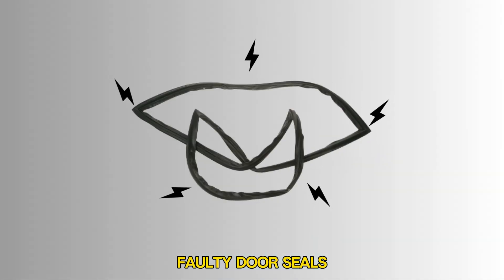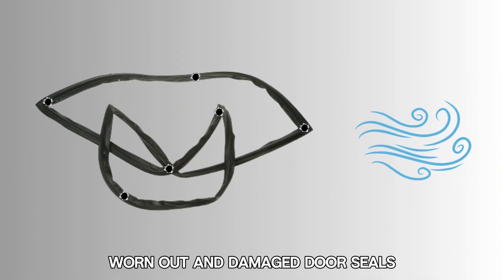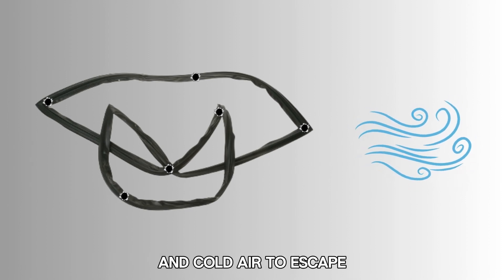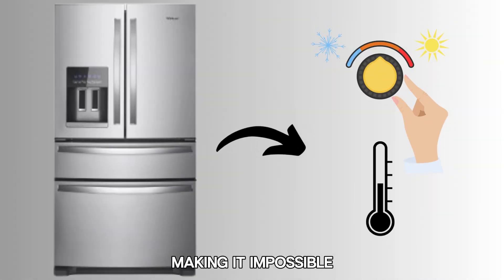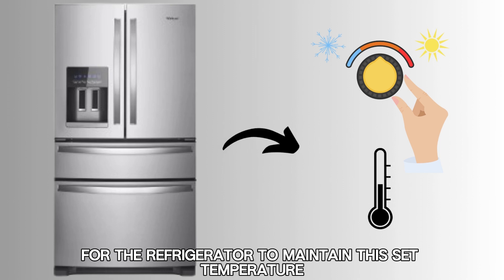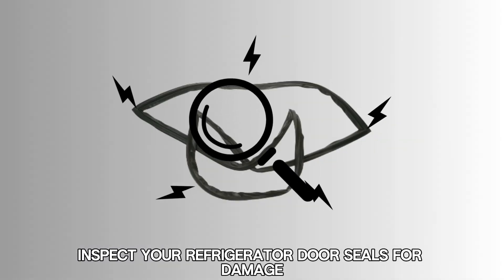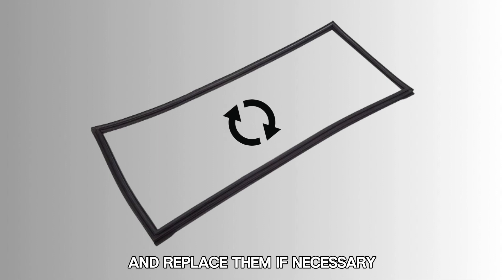Faulty door seals. Worn out and damaged door seals can allow warm air to enter the refrigerator and cold air to escape, making it impossible for the refrigerator to maintain the set temperature. Inspect your refrigerator door seals for damage and replace them if necessary.